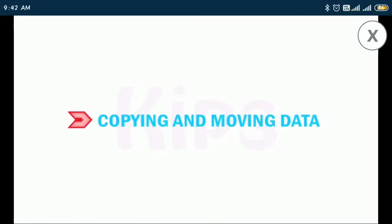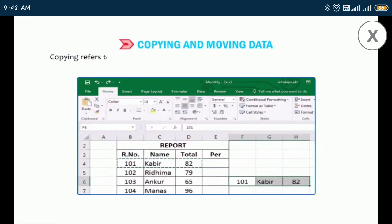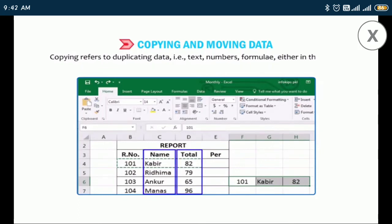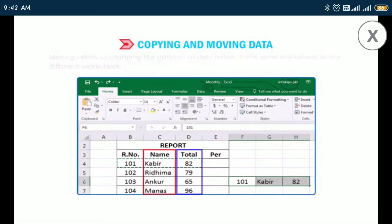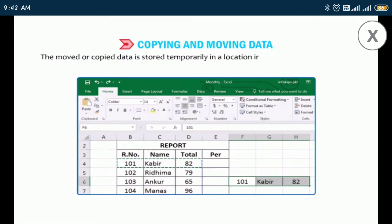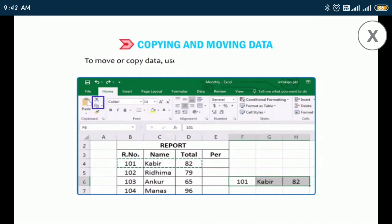Now let us find out how to copy and move data. Copying refers to duplicating data — text, formulas — either in the same worksheet or a different one. Moving refers to changing the position of data either in the same worksheet or in a different worksheet. The moved or copied data is stored temporarily in a location in computer memory called the clipboard. To move or copy data, use the Cut, Copy, and Paste commands.